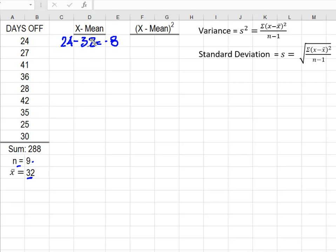41 minus 32 is going to give me 9. 36 will give me 4. I have a negative 4 here. I have 10 here.